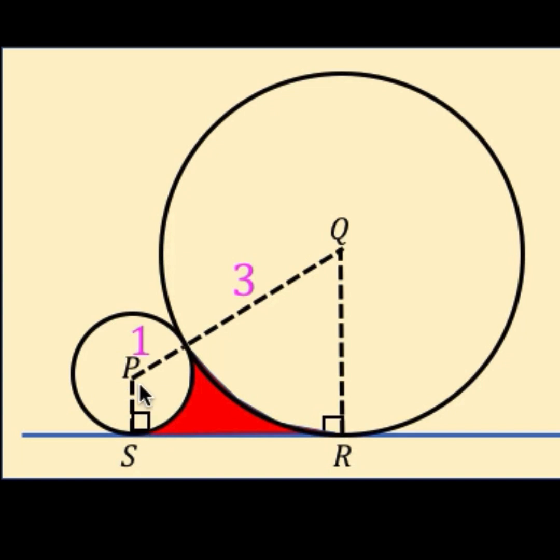Next from point P let's draw a line segment parallel to side SR and perpendicular to QR. So the angle here is also a right angle. Now what we have is a trapezoid PQRS and a right triangle, and let's call this point T, right triangle PQT.